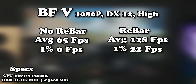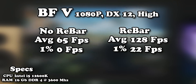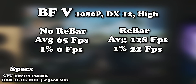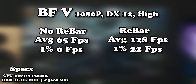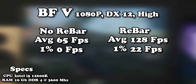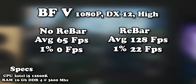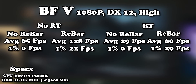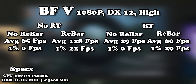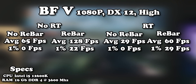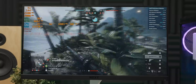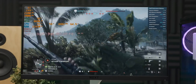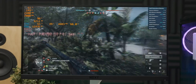A big improvement doesn't mean I'd call a 1% low of 22 frames per second good. That would be like saying stepping on a Lego is pleasurable because a landmine is so much worse. The massive improvement rebar brought continues with ray tracing settings, so clearly rebar does a lot to help Battlefield V's stutter issue on the Arc GPU.